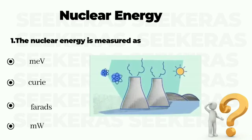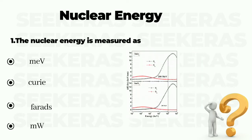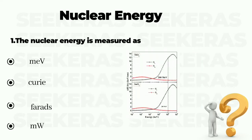Question number 1. The nuclear energy is measured as: option A mega electron volt, option B curie, option C farads, and option D megawatt. The correct answer is option A, mega electron volt.